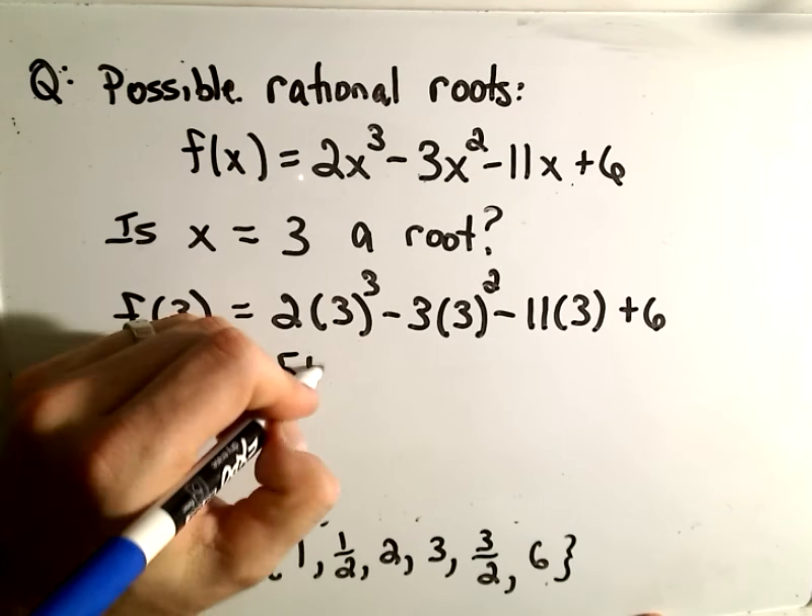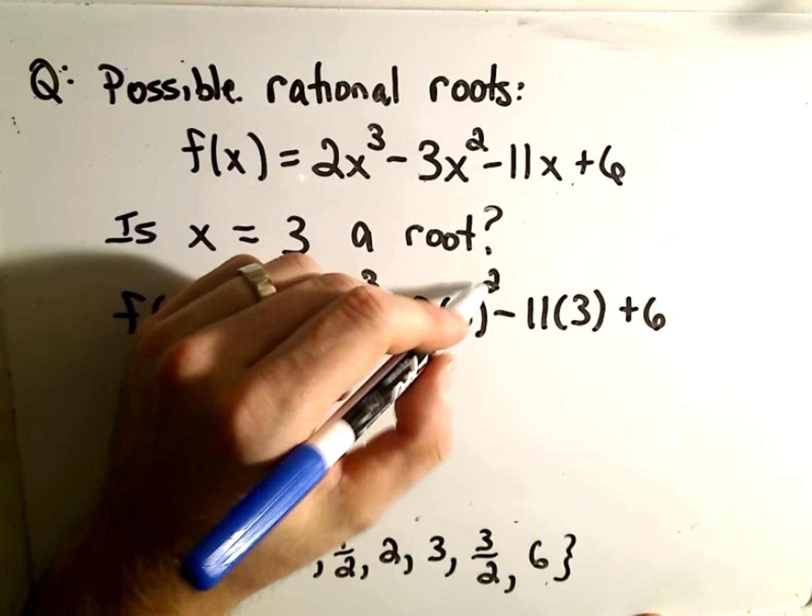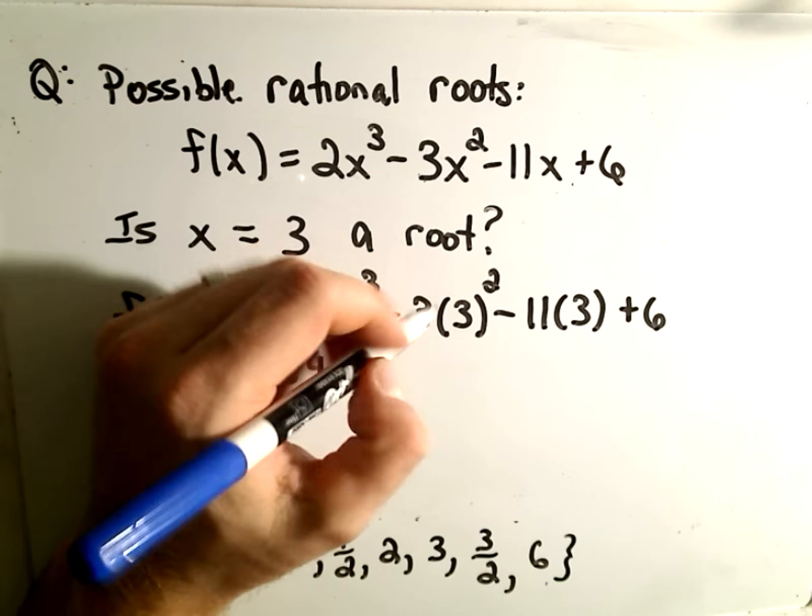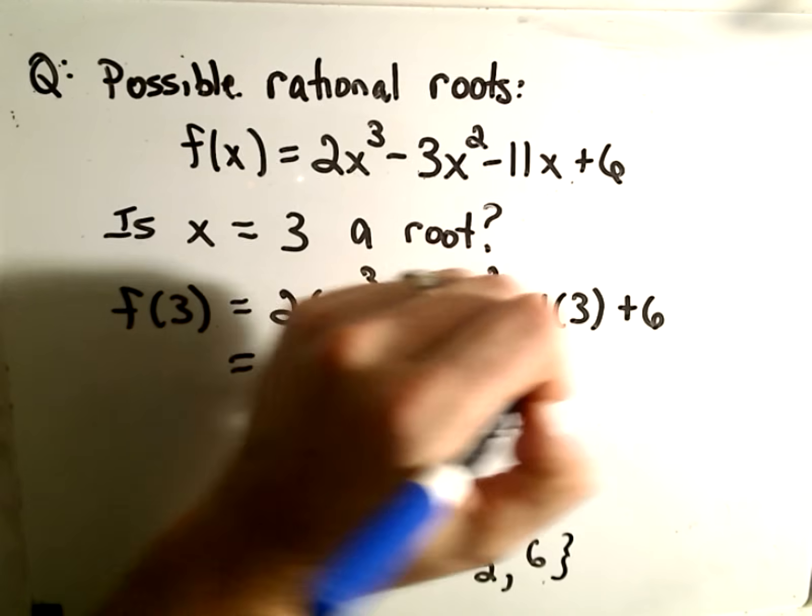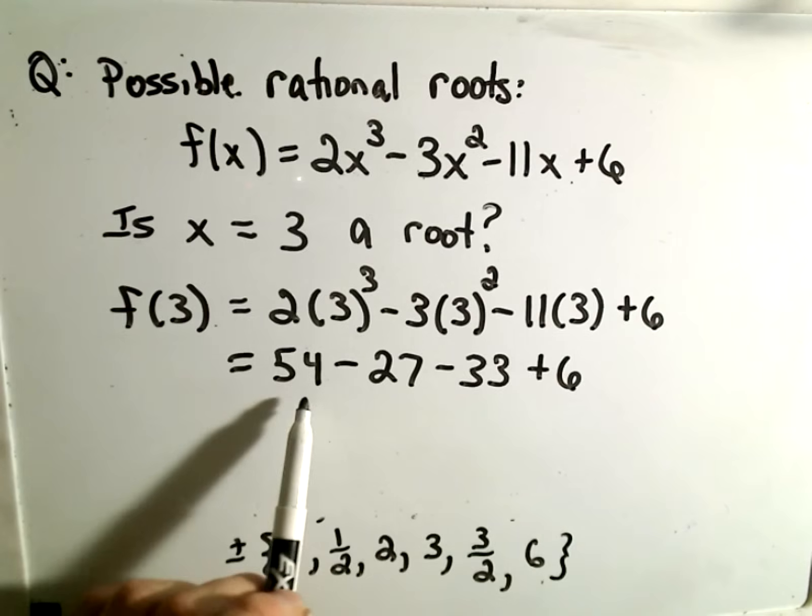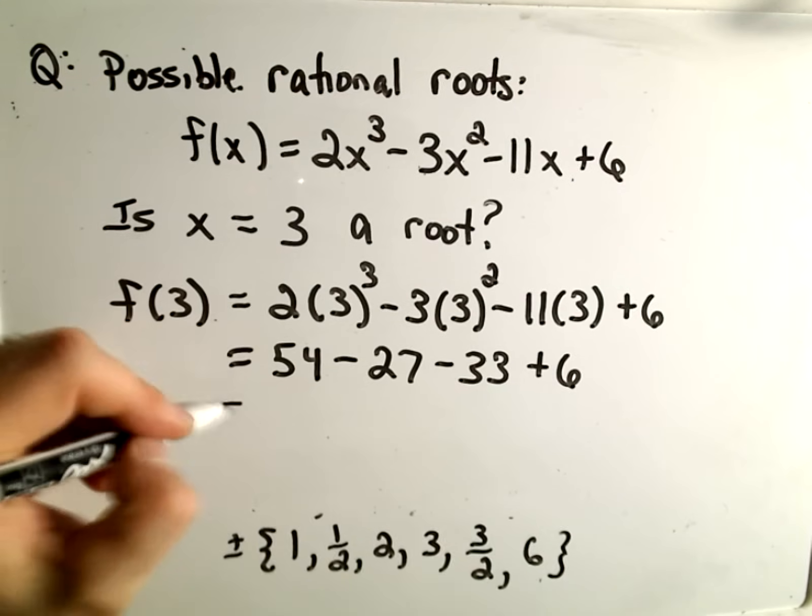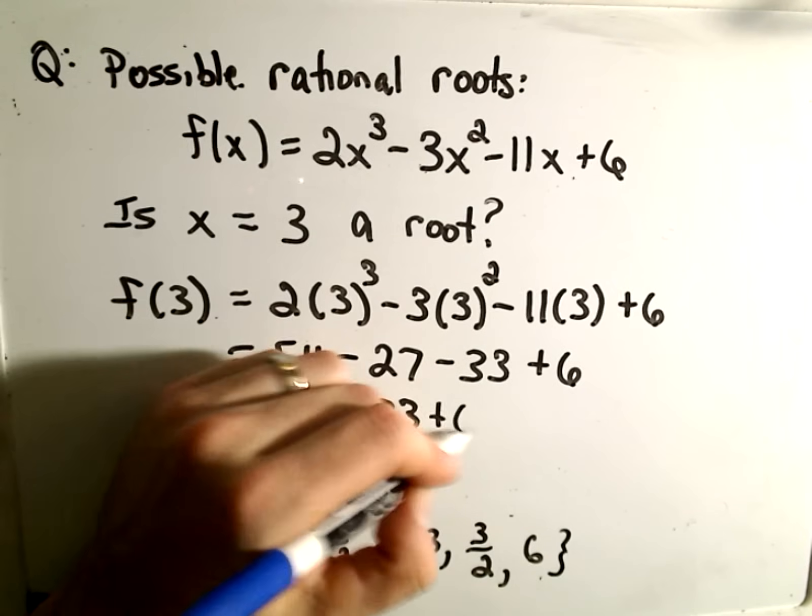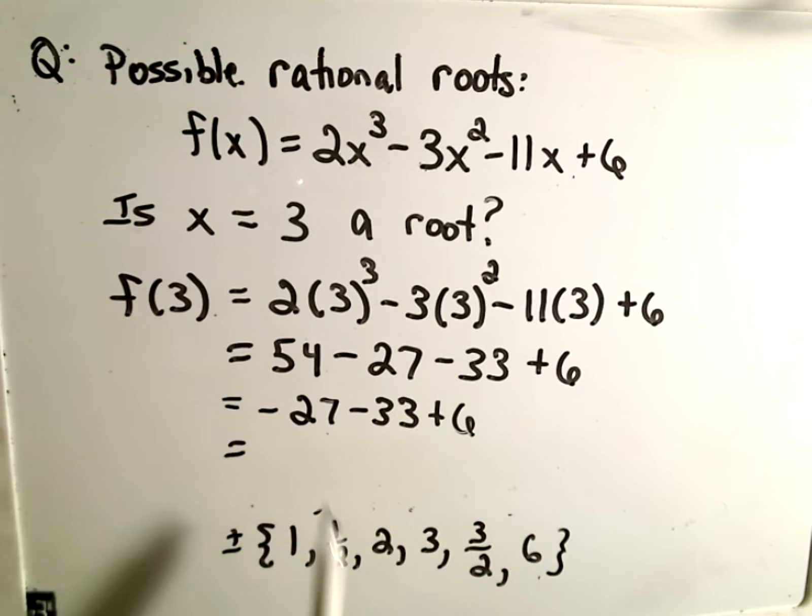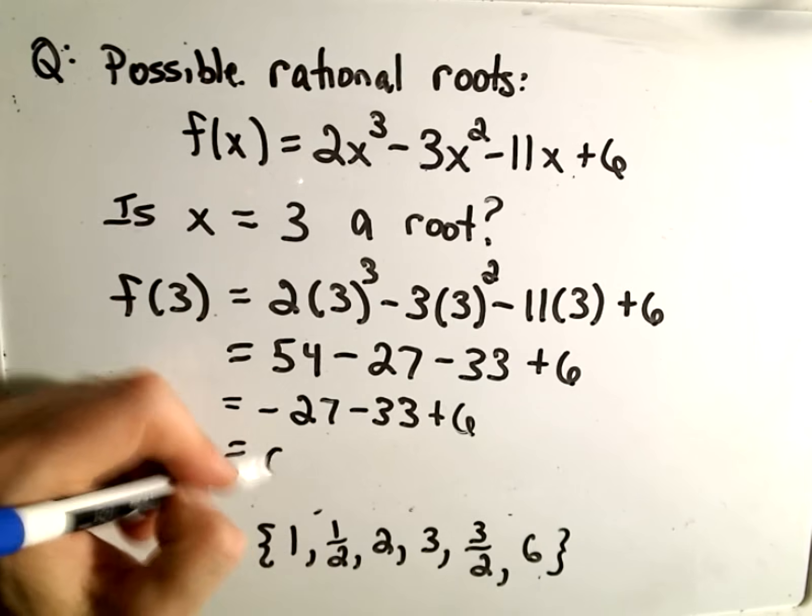3³ is 27, 27 times 2 is 54. 3² is 9, 9 times 3 is 27. So we get 54 - 27 - 33 + 6. 54 - 27 is 27, wait that's -27, minus 33 plus 6. -27 - 33 is -60, -60 + 6 is... wait, -27 - 33 is -6, -6 + 6 is 0.